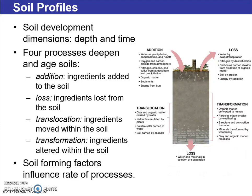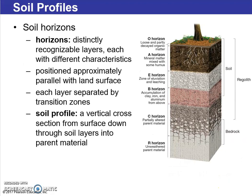Soil horizons are distinct, recognizable layers visible in a soil profile, as shown on the right. We see mineral matter, illuviation, leaching, clay, iron, and aluminum, as well as partially altered and unweathered parent material in several different categories. A profile is a vertical cross-section from the surface down, while horizons are horizontal layers — as the name implies.